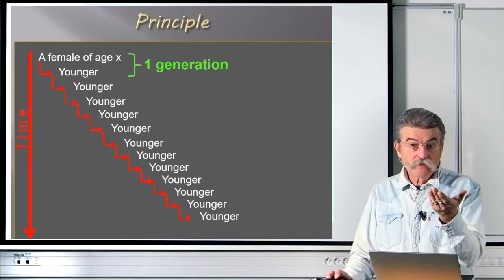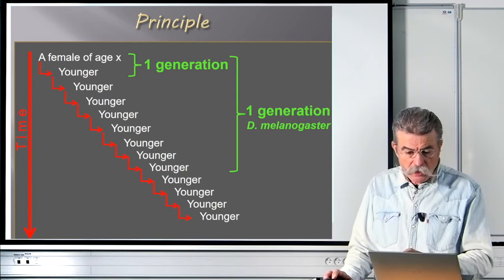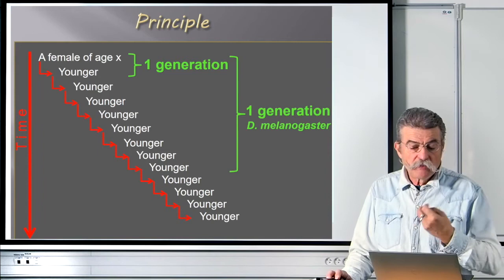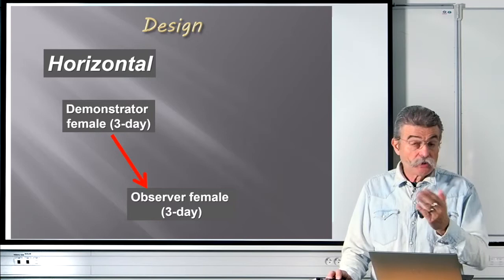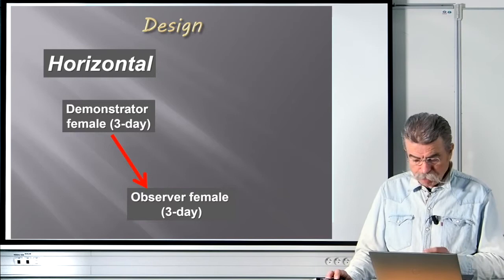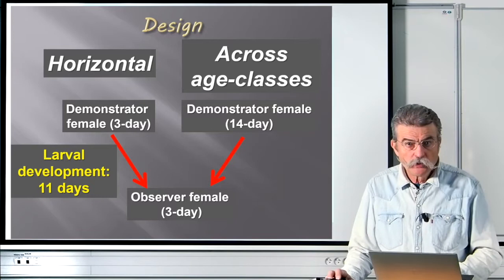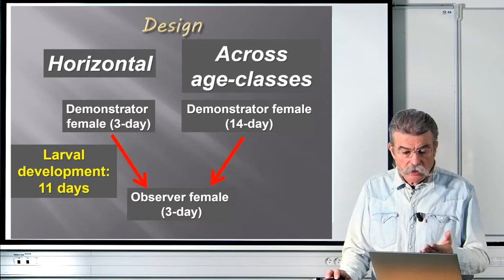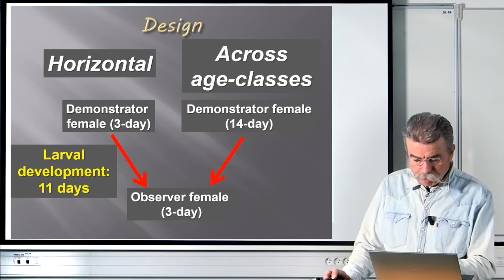One generation could span from parent to offspring, or it could involve several transmission steps per generation, as is likely in Drosophila melanogaster. We tested this in a situation mimicking one where the demonstrator female would be the age of the parents of the observer females. There were two treatments: a horizontal one, replicating criterion 1 where demonstrator and observer females were the same age — three days old — and a second treatment designed using the 11-day larval development at 25°C, so a 14-day-old female would be the minimum age of the mother of 3-day-old observer flies.